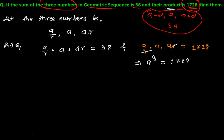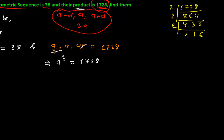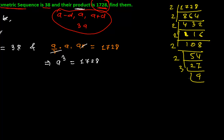To find the value of a, I need to take the cube root of 1728, so let me do the prime factorization of 1728. Dividing repeatedly: 1728 ÷ 2 gives 864, then 432, 216, 108, 54, 27. Then 27 ÷ 3 gives 9, 9 ÷ 3 gives 3, 3 ÷ 3 gives 1. So we get six 2s and three 3s.